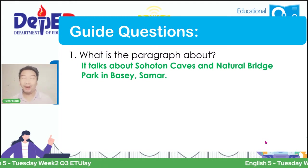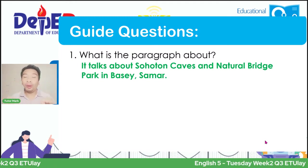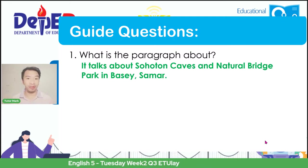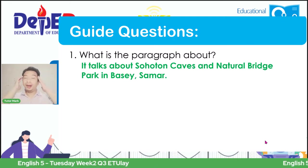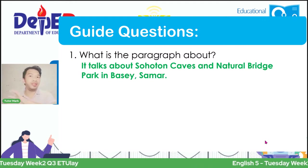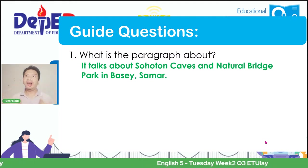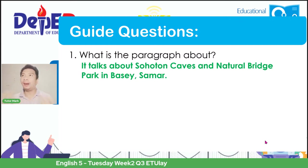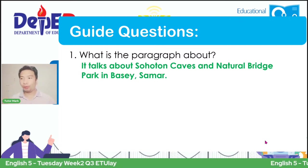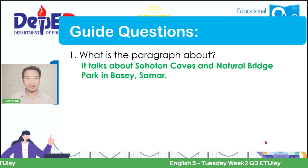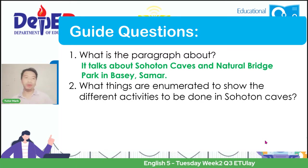You can write it down now. The paragraph is about the Sohotan Caves found in Basay, Samar. Now that we know what it is about, your summary should revolve around that. I mentioned that it is an enumeration text because it elaborated the activities. So since we know the activities, we will list them one by one. Question number two: what things are enumerated to show the different activities to be done in Sohotan Caves?